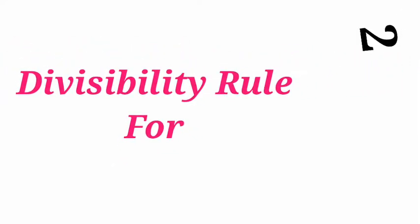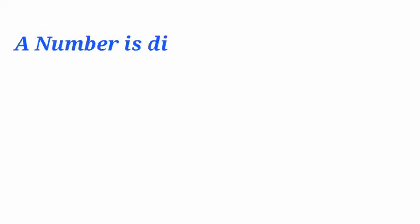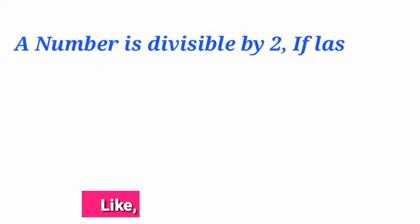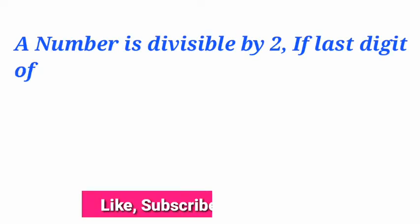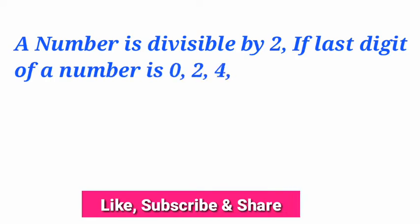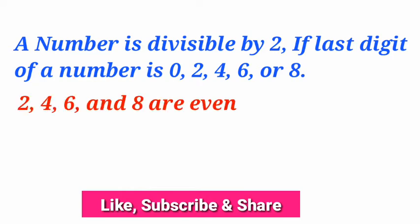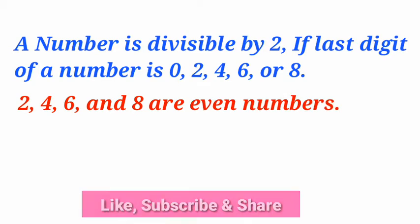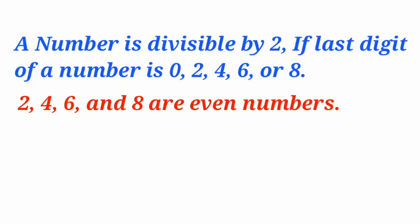Divisibility rule for 2. A number is divisible by 2 if the last digit of a number is 0, 2, 4, 6, or 8. Here 2, 4, 6, and 8 are even numbers.